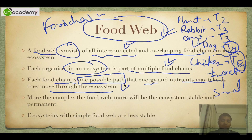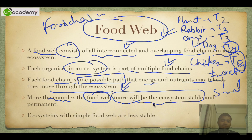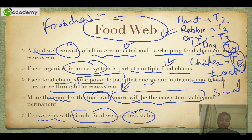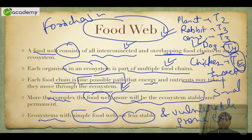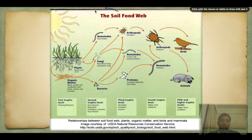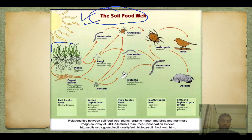The more complex the food web, the more stable the ecosystem will be, because if one or two species become extinct the food web can compensate for nutrition and energy transfer. However, if the species number is very limited — that is, the food web is not complex — the entire ecosystem will collapse. Ecosystems with simple food webs are less stable and extremely vulnerable and prone to extinction and collapse.